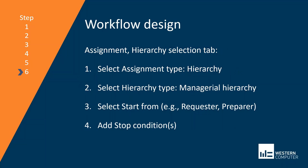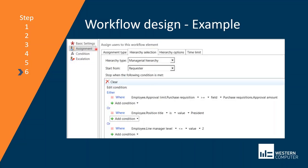I'm going to assume you have some experience with the workflow designer, so we're going to jump directly to the workflow design and take a look at the assignment type. In the designer, we'll look at the hierarchy setup of the assignment type, the hierarchy type, the start from in the hierarchy, and then the stop conditions. Here, under assignment in the workflow designer on the hierarchy selection tab, for my hierarchy type I'm choosing managerial hierarchy. The other option is a configurable hierarchy, which you can design in organization setup, but we're going to use the managerial hierarchy, which refers to the position hierarchy in human resources.